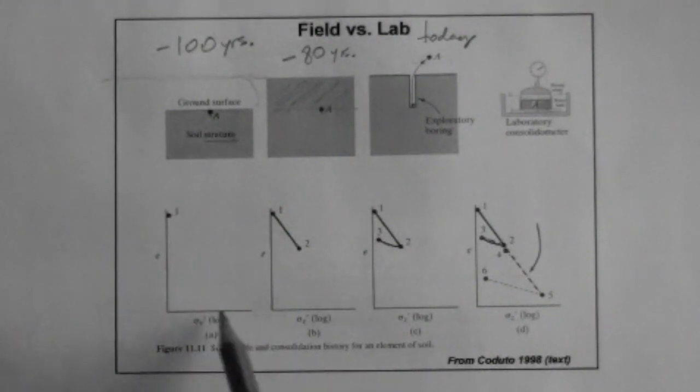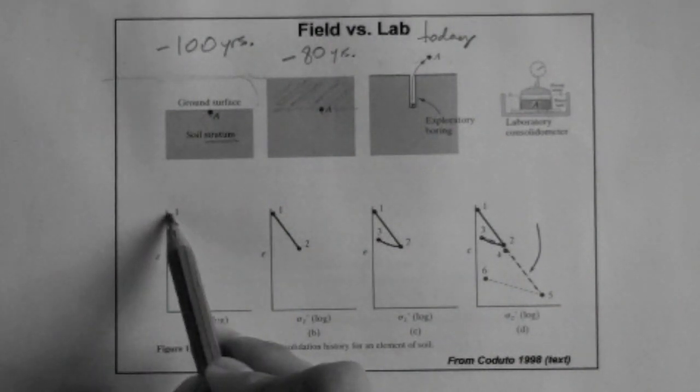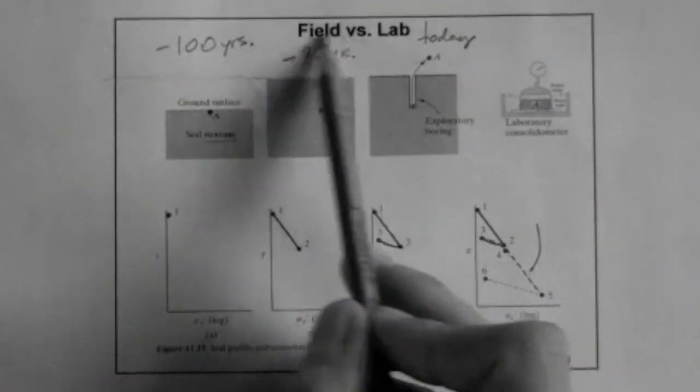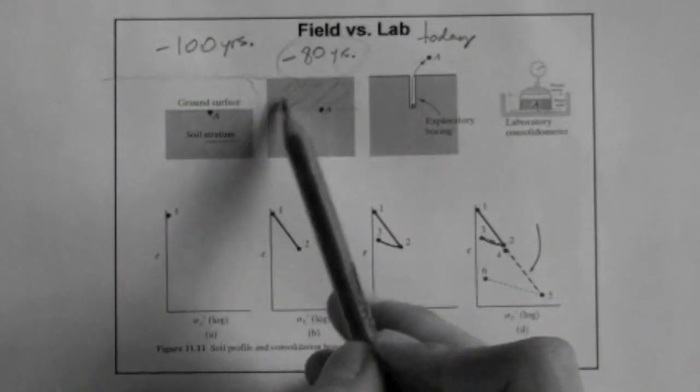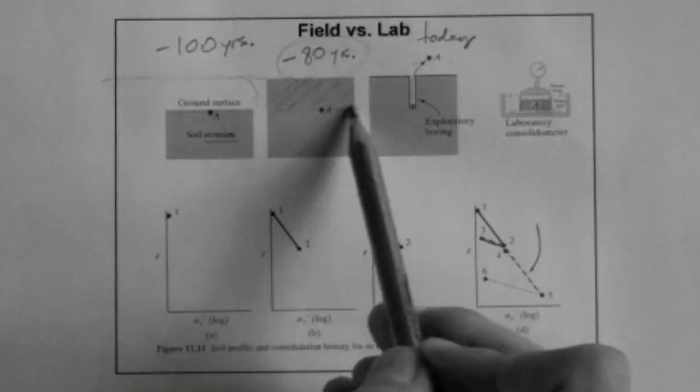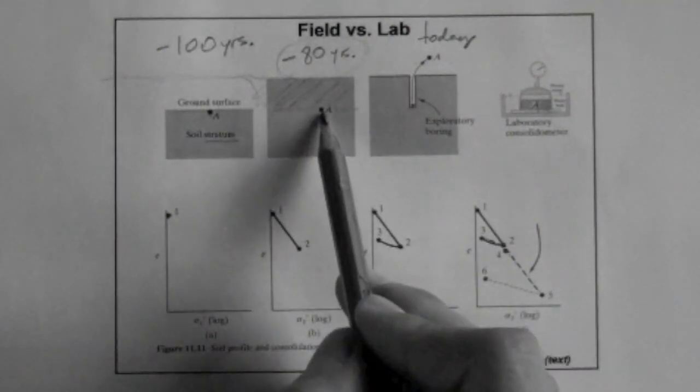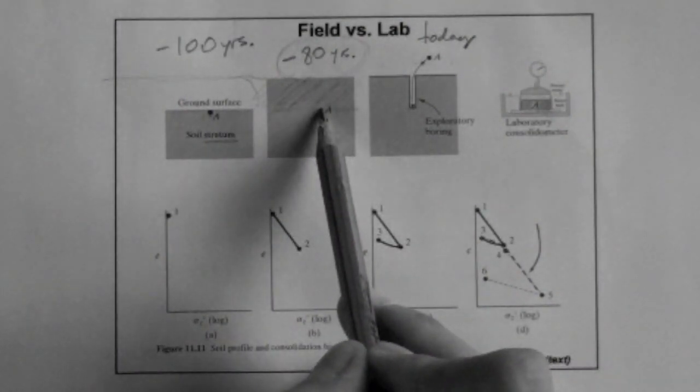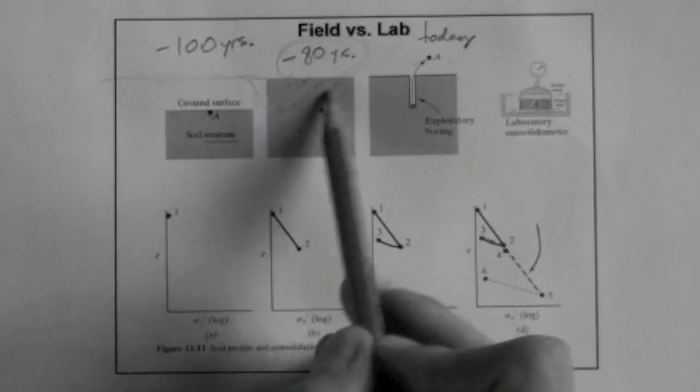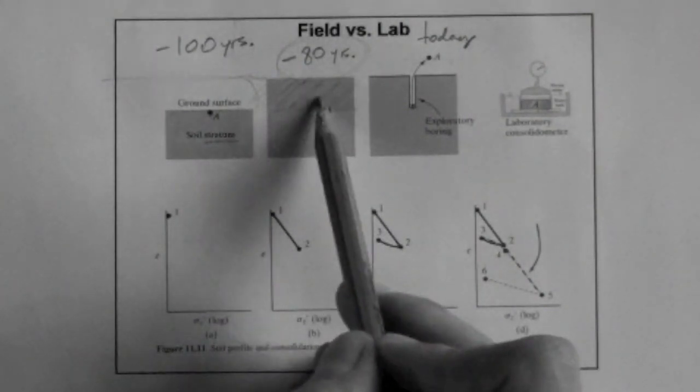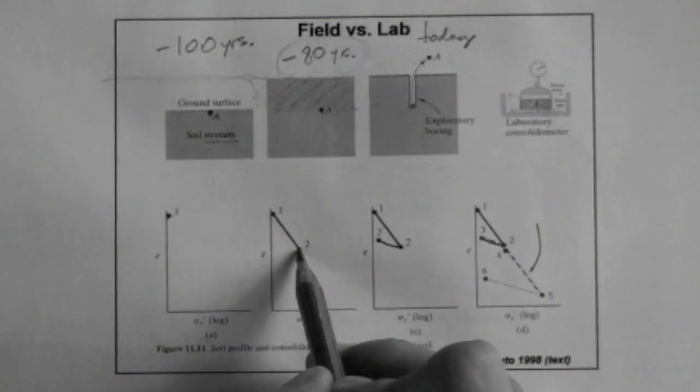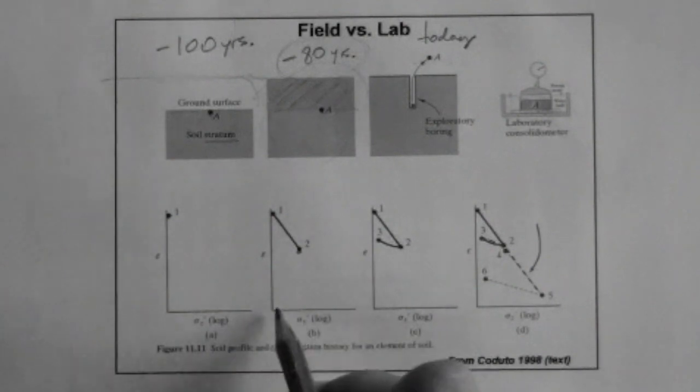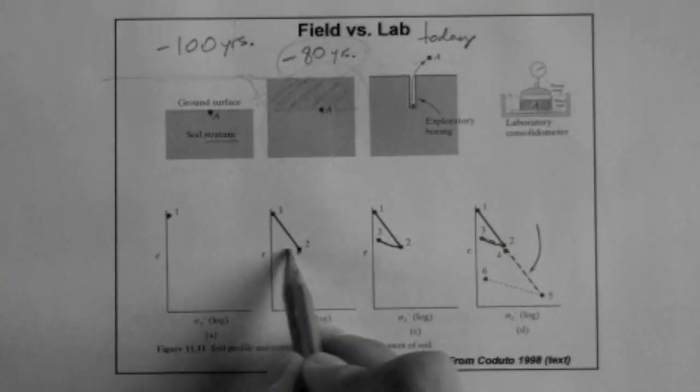So the void ratio is high and the stress is low. Then 20 years later, negative 80 years ago, there is a landslide and some soil gets deposited on top of the point. So the point is now under a higher stress than before because there's more soil above it. And the void ratio is probably lower because the soil has densified given the fact that there's load above it. So the point associated to this situation here is here. The stress is higher and the void ratio is lower.